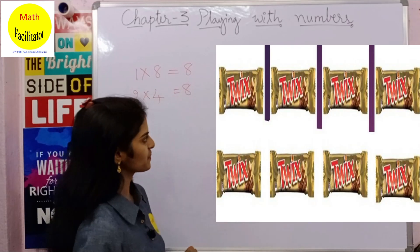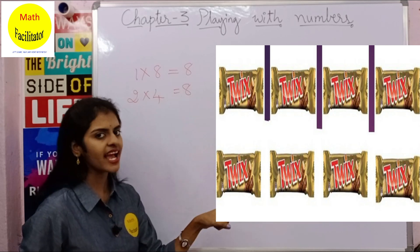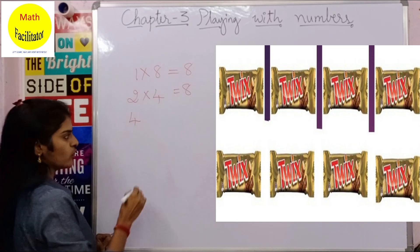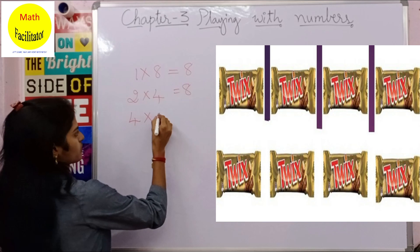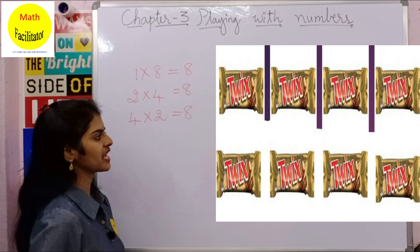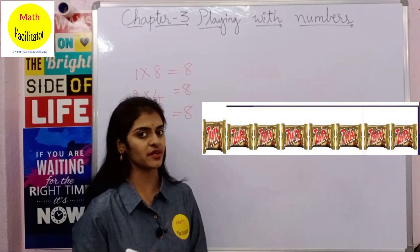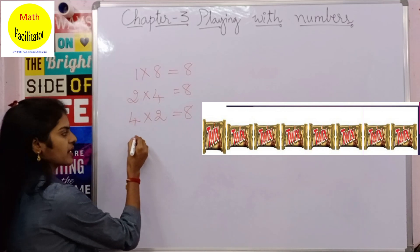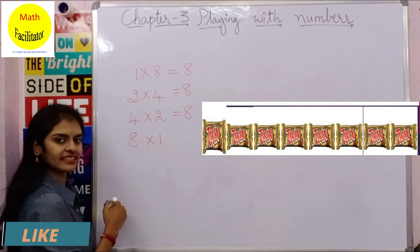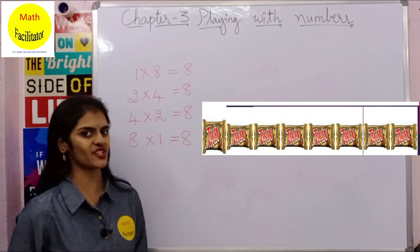In the third arrangement, there are only 2 rows and 4 chocolates are arranged in each row. So 4 twos are 8. In the last arrangement, all 8 chocolates are arranged in one single row — 8 ones are again a total of 8 chocolates.